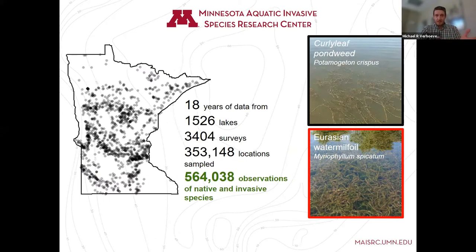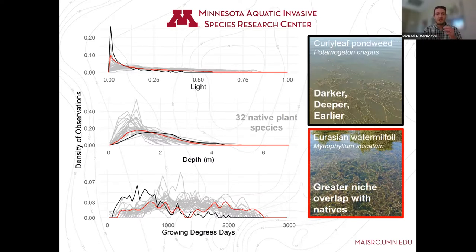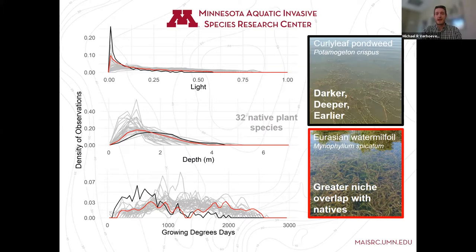We were able to do this using data collected likely from many of you in the room. We aggregated many observations of native and invasive plants across the state and constructed niches — multi-dimensional places in the environment that a species makes its living. We compared the niches of those invaders to native species. We found curly leaf pondweed seemed to be succeeding by avoiding competition with native species, growing darker, deeper, and earlier. On the other hand, Eurasian watermilfoil seemed to be succeeding by getting right in there and competing strongly with native species, having strong niche overlap with the natives.